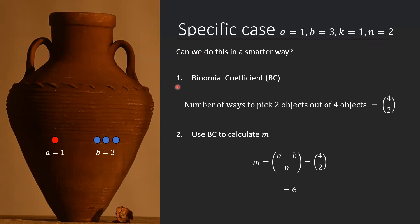What does the binomial coefficient say? It says that if you want to pick two objects out of four objects — where these numbers are examples — this can be calculated using the binomial coefficient. This is the standard notation where the number at the top is the number of possible objects, and the number at the bottom is how many we take out. So if we use the binomial coefficient to calculate m, we have A plus B on top (total number of balls) and n at the bottom (number of balls picked). This gives us the binomial coefficient (4 choose 2) which equals 6, exactly what we calculated before. This is a standard calculation available in almost any calculator.